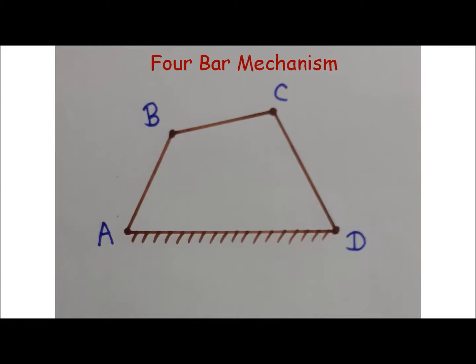At point A, there is a turning pair between link AB and AD, meaning link AB can turn relative to fixed link AD. At point B, there is a turning pair between link AB and BC, so AB and BC can turn relative to each other. At point C, there is a turning pair between link BC and CD, so BC and CD can turn relative to each other.